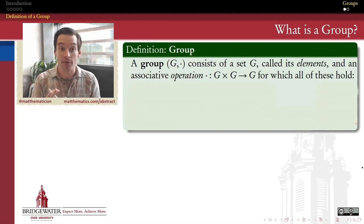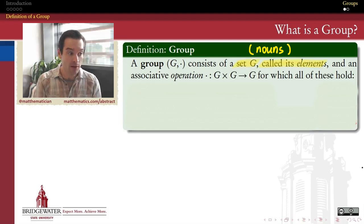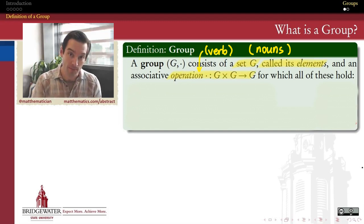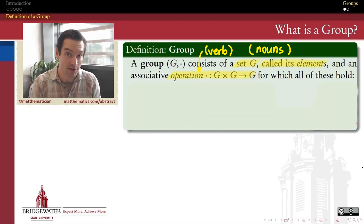The definition of a group is that it consists first of all of a set. It's going to be a set called the set of elements. I think of these as the nouns in the universe that this group defines. And it also has an operation. Think of this as the verb. This is a way of turning two elements from that group into another element from that set. And we also require that that operation be associative, that it satisfy the associative property.